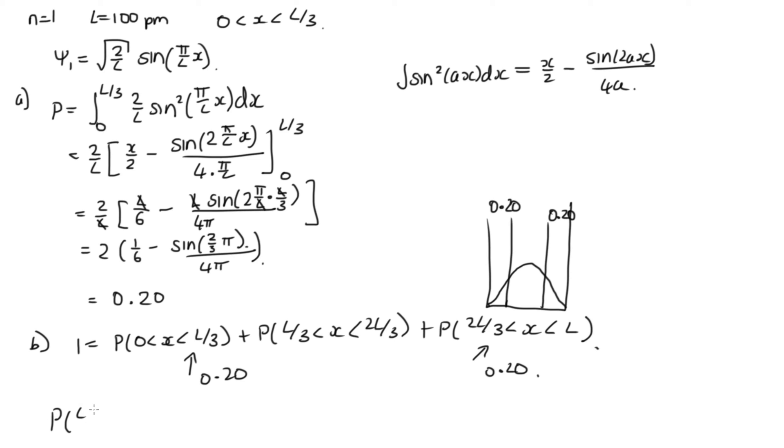So the probability that it's between L over 3 and 2L over 3 is equal to 1 minus 0.20 minus 0.20, which is equal to 0.60. So hopefully that makes a little bit of sense. This was a very challenging problem, but that is how we go about solving it.